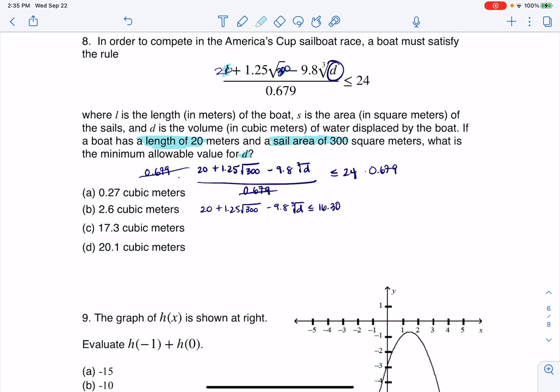All right, so the next thing I would do on my calculator is crunch 1.25 times the square root of 300. And when I do that, I get 21.65. So now I'm looking at 20 plus 21.65 minus 9.8 times the cube root of D. It's got to be less than or equal to 16.30.